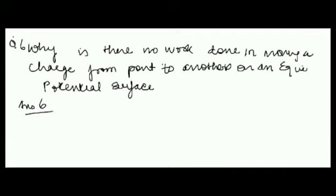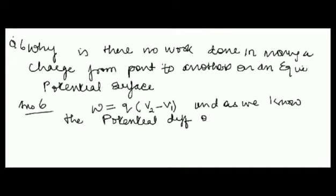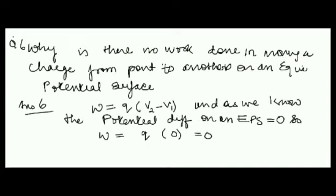Answer 6. Work done is Q(V2 - V1). The potential difference on an equipotential surface is 0, so work done will be equal to 0.